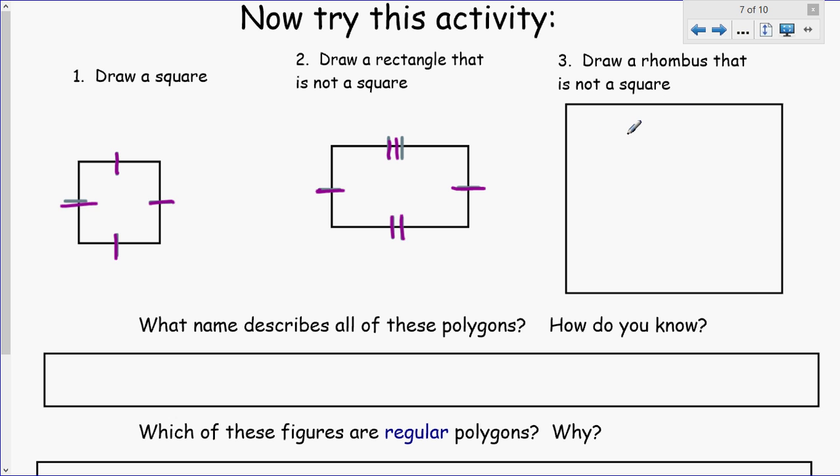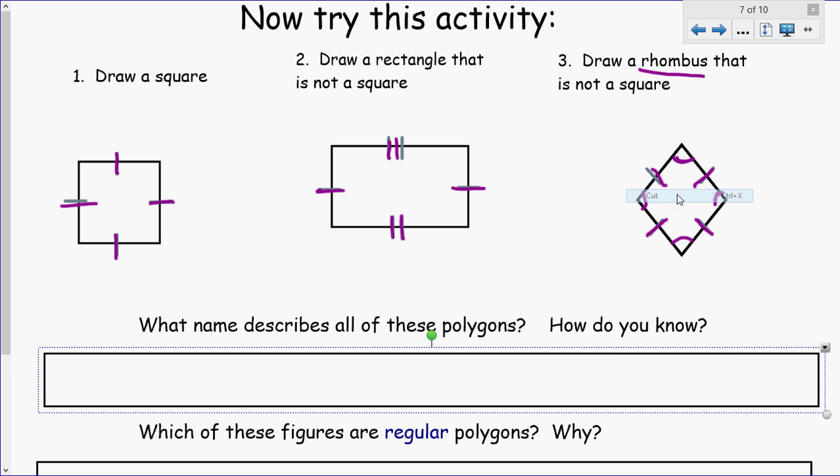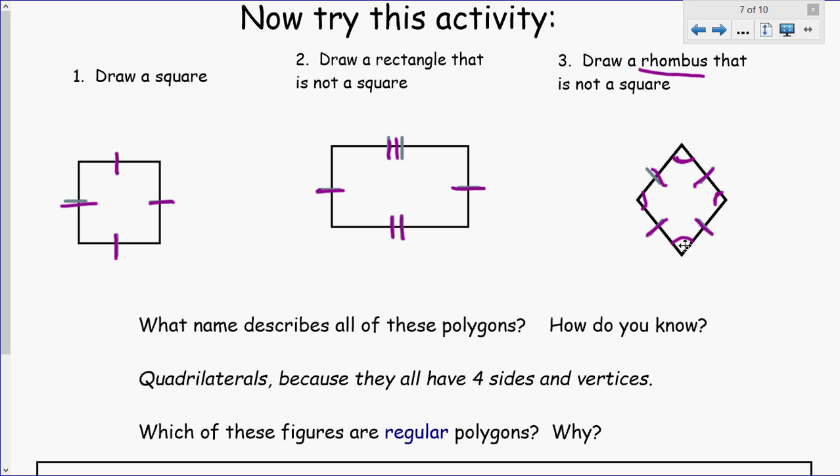Now for the third one, draw a rhombus that is not a square. Ta-da! That's a rhombus and that was probably the one that many of you were like, huh, I don't know what that is, but this is a rhombus. A rhombus has four equal sides like a square, but it's not a square because it does not have 90 degree angles. So it's kind of like a square that's been squished in, almost like a diamond.